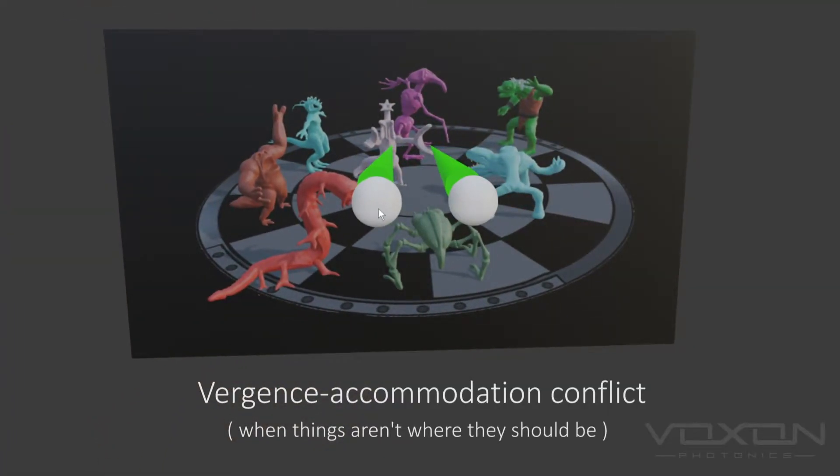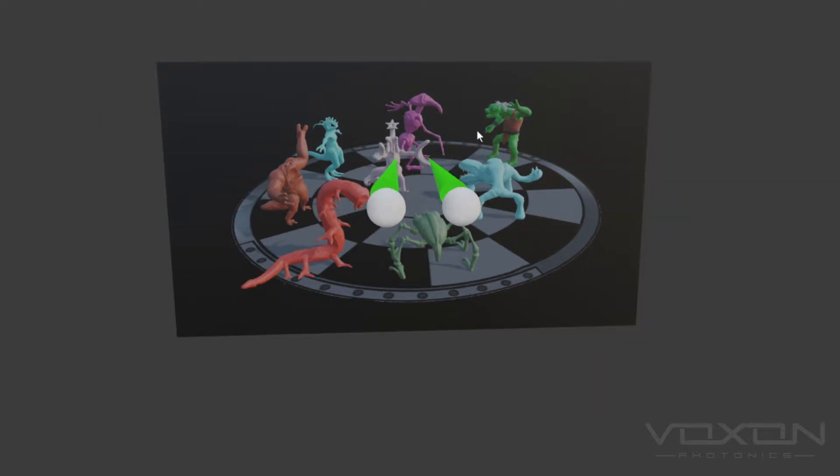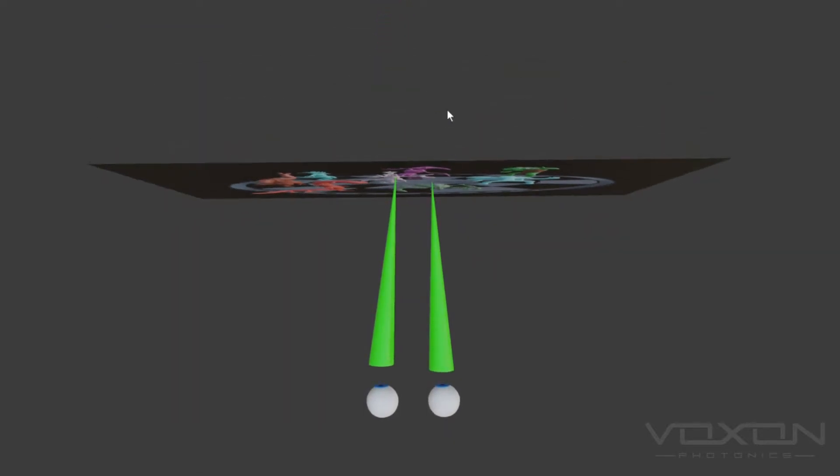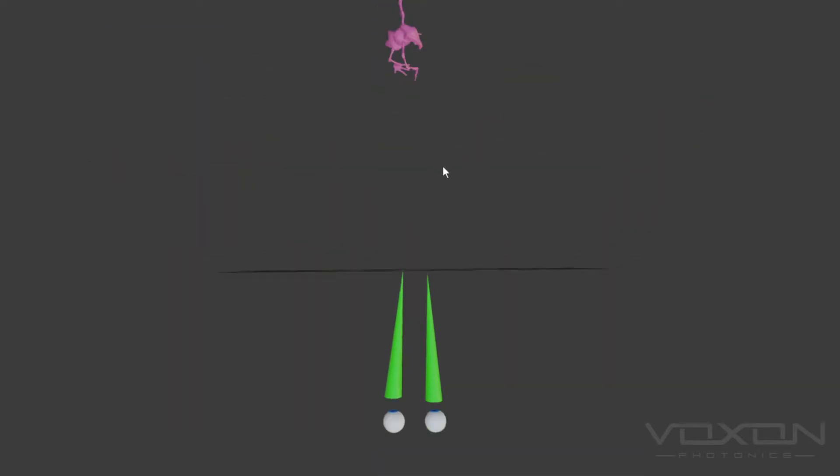Most 3D displays use stereo imaging to create a three-dimensional view. Your brain calculates where an object should be according to the views presented to it. This works incredibly well.